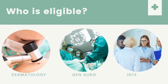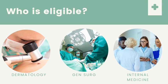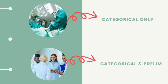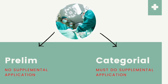You might be wondering who is eligible to complete this supplemental ERAS application. If you are applying to any of the following specialties, then you are eligible: dermatology, general surgery, and internal medicine. For general surgery, it's for categorical residency programs only. However, if you intend on applying to a categorical or preliminary internal medicine residency program, you are also eligible. Applicants applying to preliminary general surgery would not be required to complete the supplemental ERAS application.